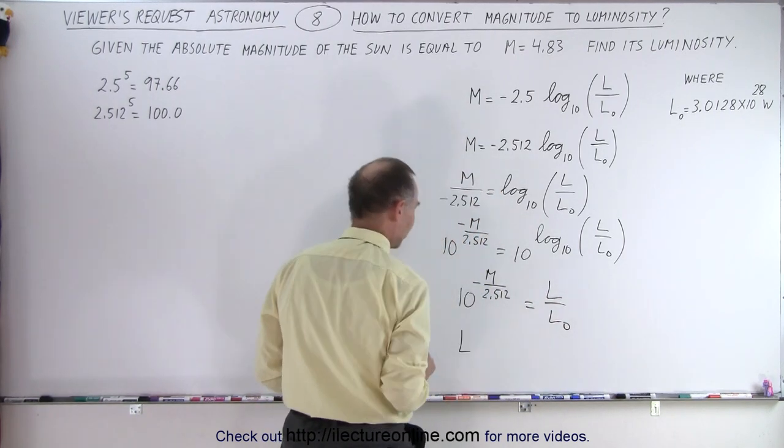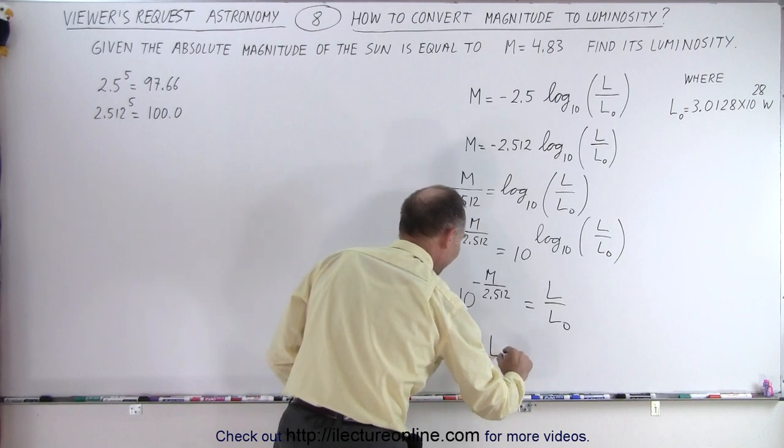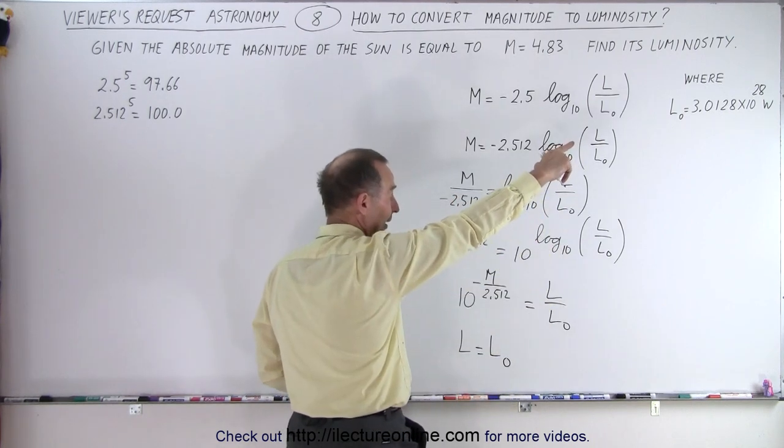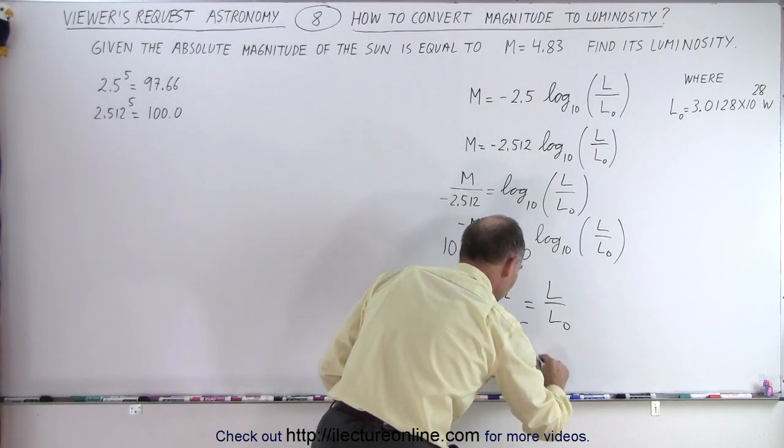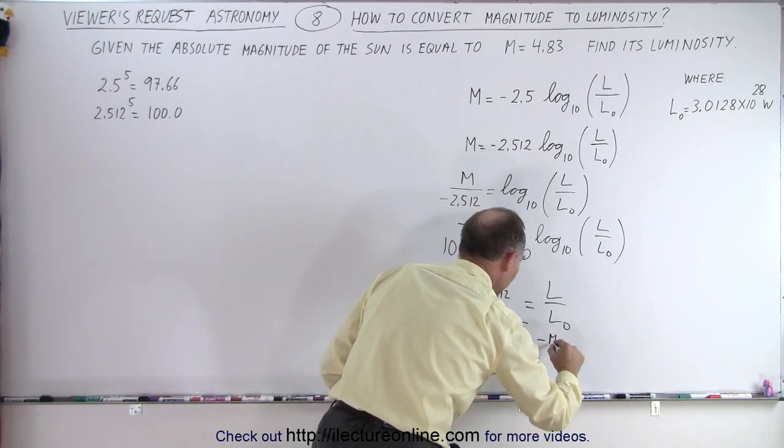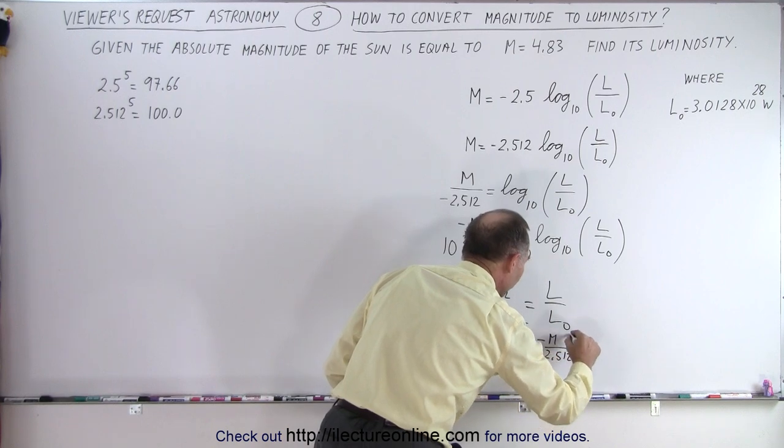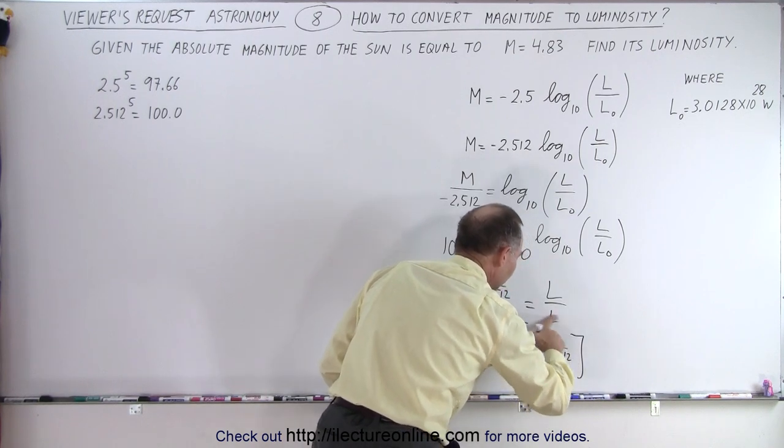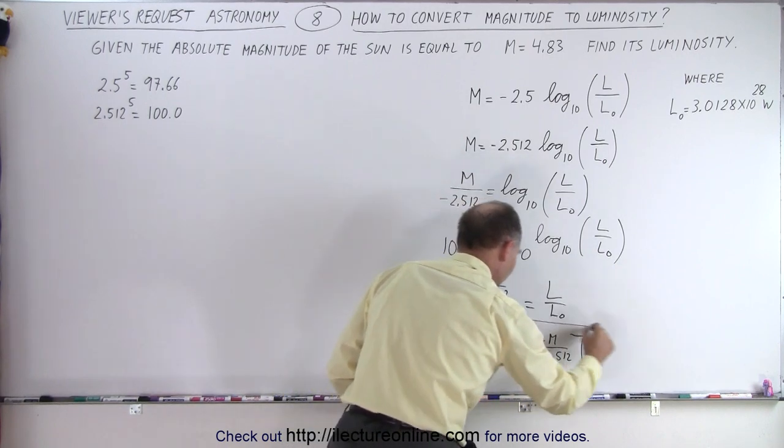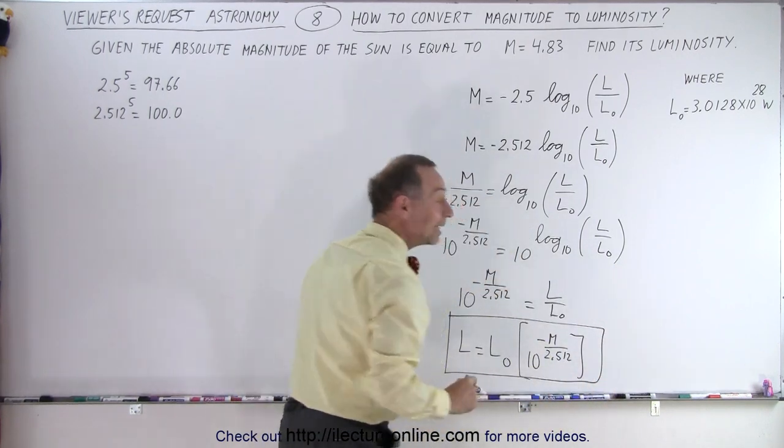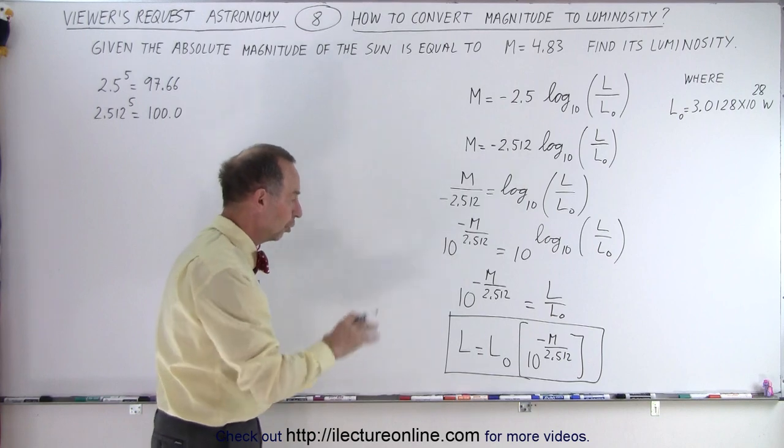So finally, the luminosity of a star equals the baseline luminosity, which is given by that number, times what's in here, which is 10 raised to the minus the magnitude divided by 2.512. And let me write that a little bit higher up, so there we go. So we can put a box around this. That's the equation we need to convert from magnitude to luminosity.